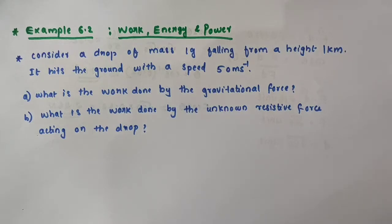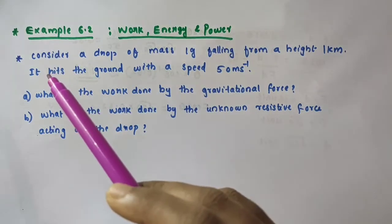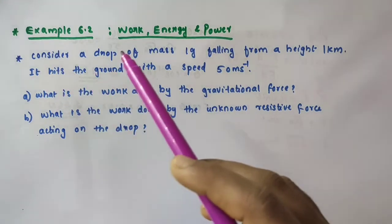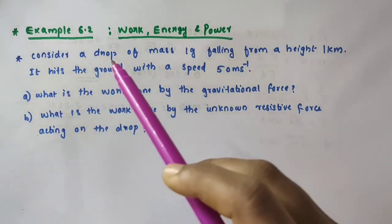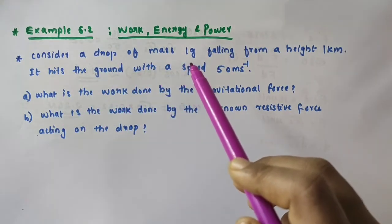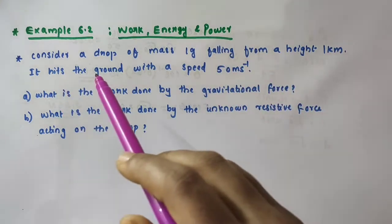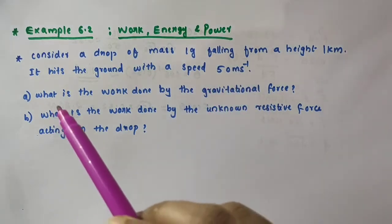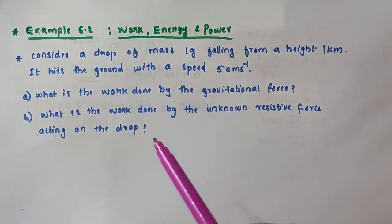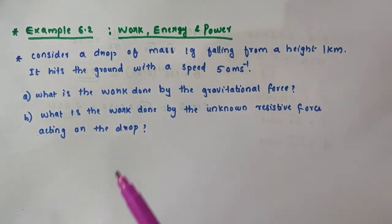Hello everyone. In this video we will discuss example 6.2 from chapter 6, class 11 physics — work, energy, and power. The question is: consider a drop of mass 1 gram falling from a height of 1 kilometer. It hits the ground with a speed of 50 meters per second. What is the work done by the gravitational force and what is the work done by the unknown resistive force acting on the drop?